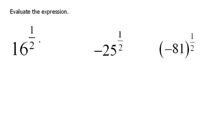So remember, this bottom number is our index. The top number, the numerator, is our power. So if I were to rewrite that as a radical instead of a fractional exponent, that would be the square root of 16 to the 1st power. Now we can see immediately what the answer is because we know the square root of 16 is 4.